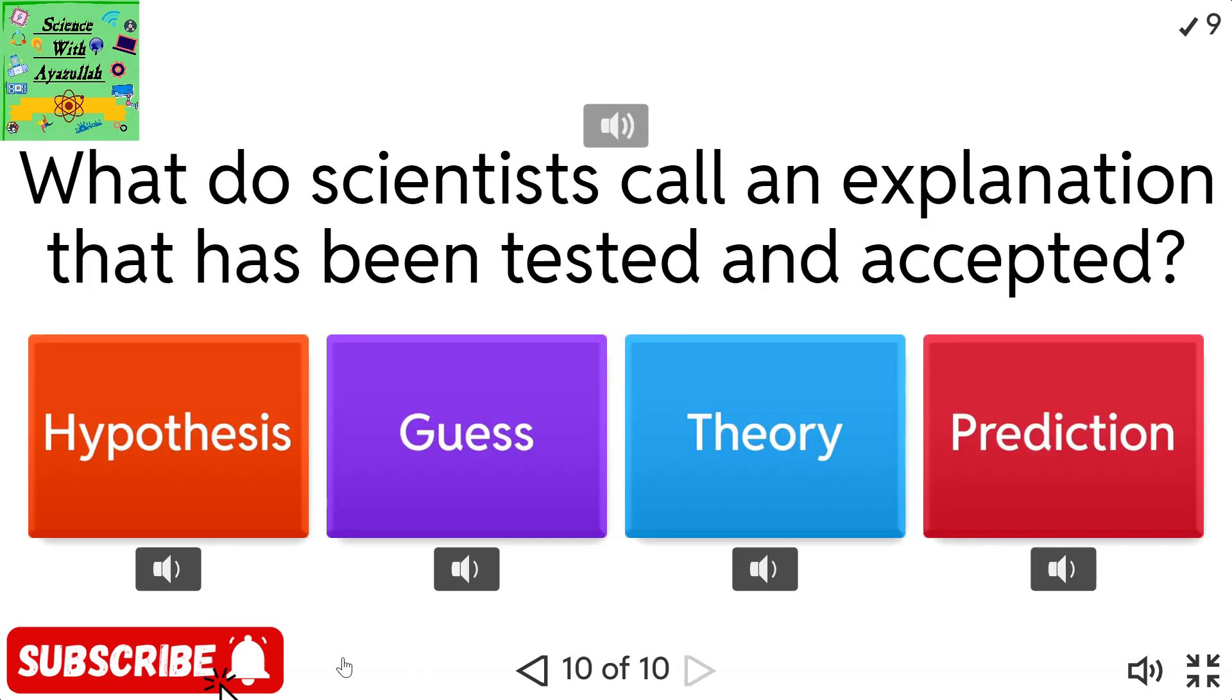What do scientists call an explanation that has been tested and accepted? Hypothesis. Guess. Theory. Prediction.